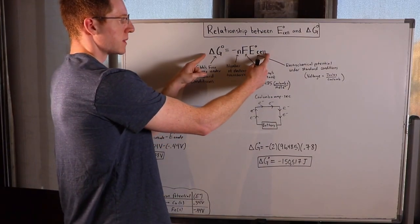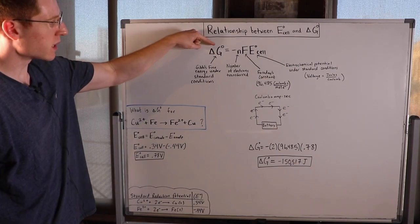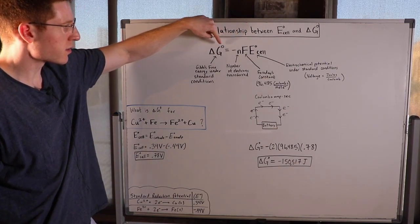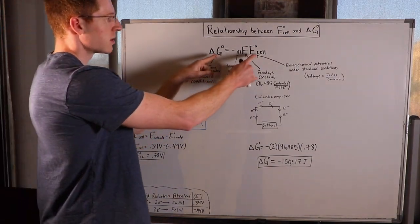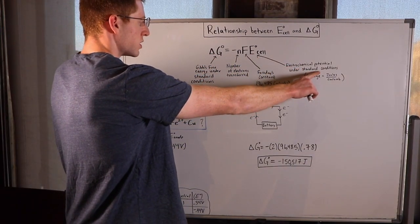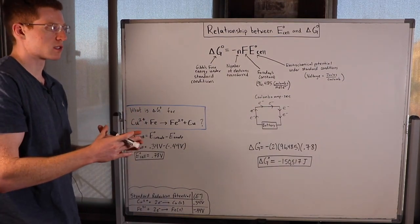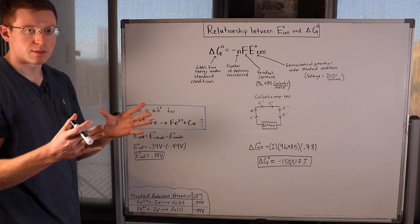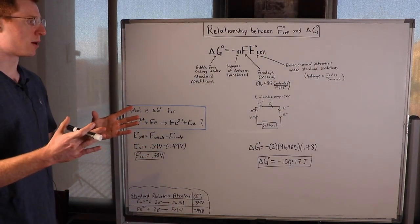So you can see I've written their relationship up here in equation form, and you'll notice that at the top of both delta G and E-cell, there's this little degree symbol. And what that means is that both of those values are measured under standard conditions. Standard conditions for solutions means one molal concentrations, for gases it means one bar or one atmosphere pressure, and they're just standard conditions that chemists have agreed upon.